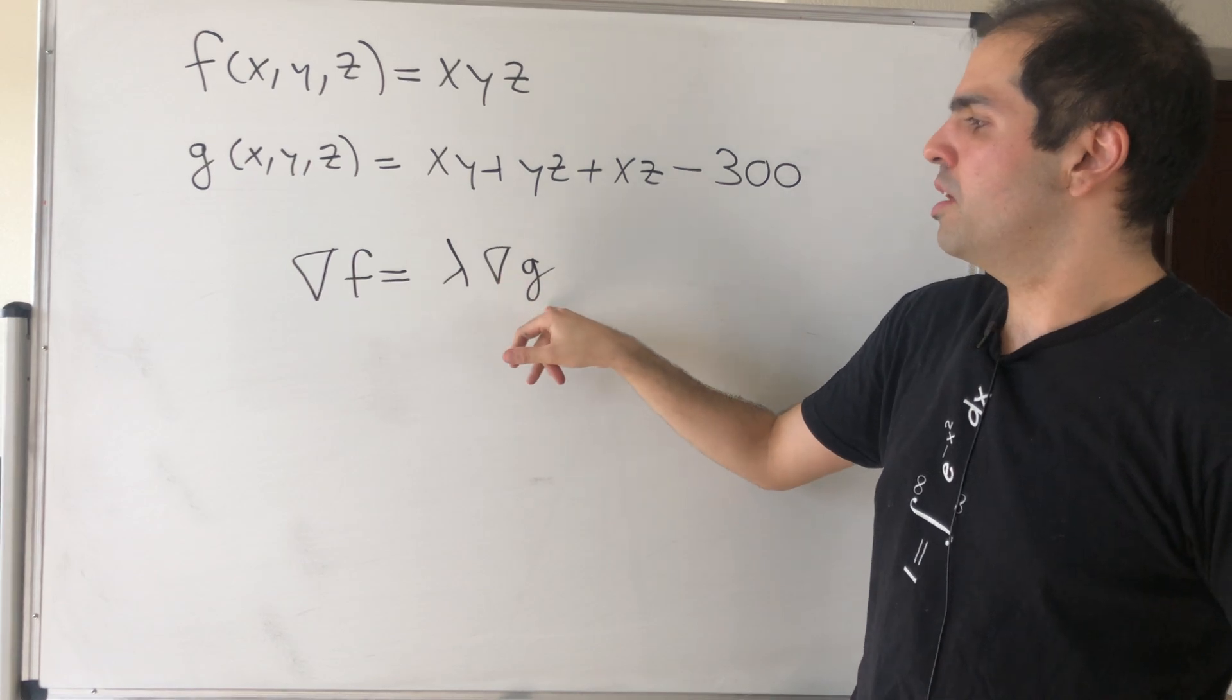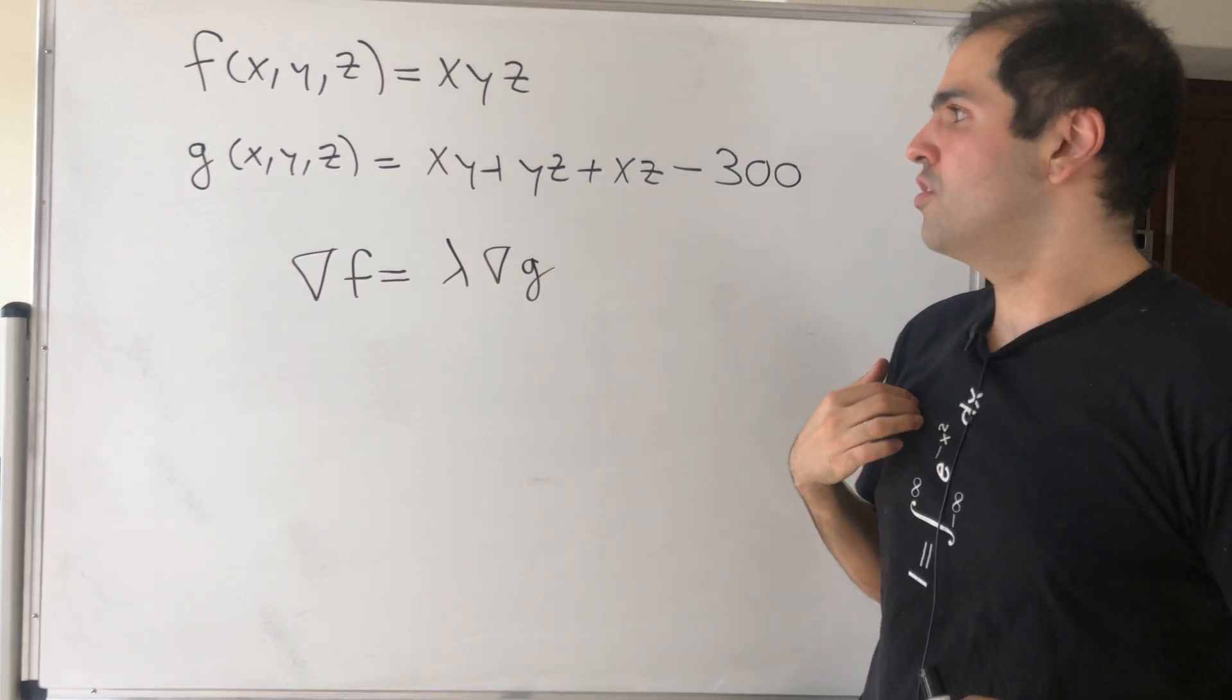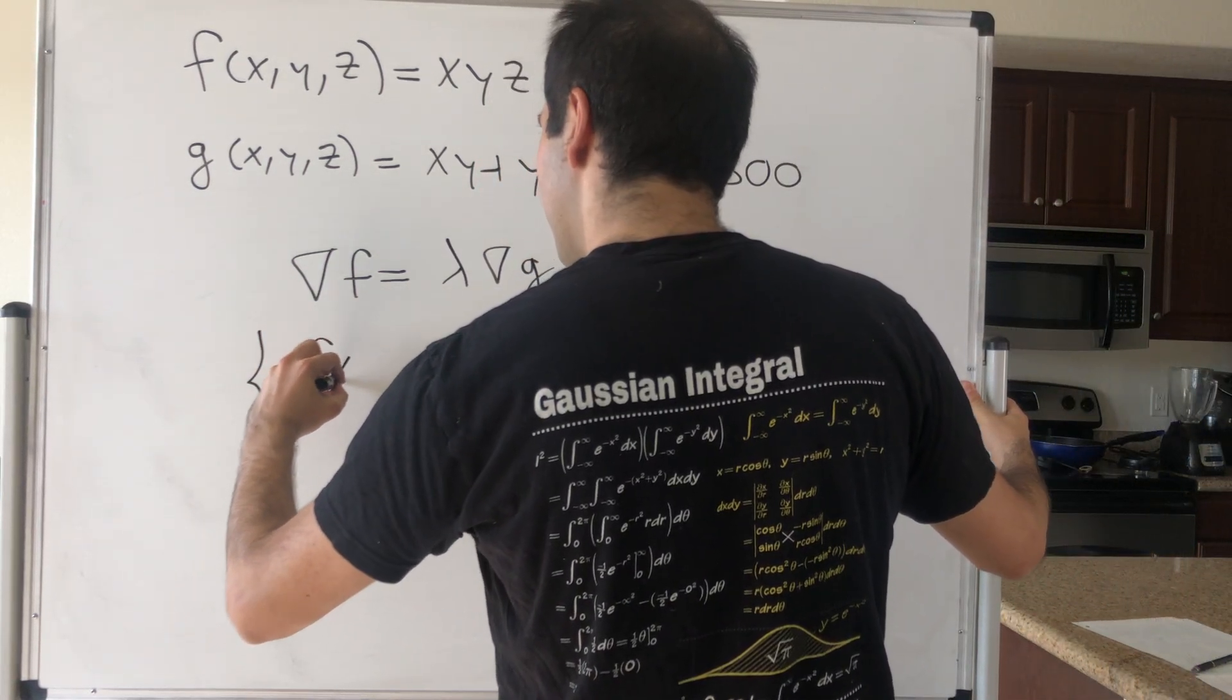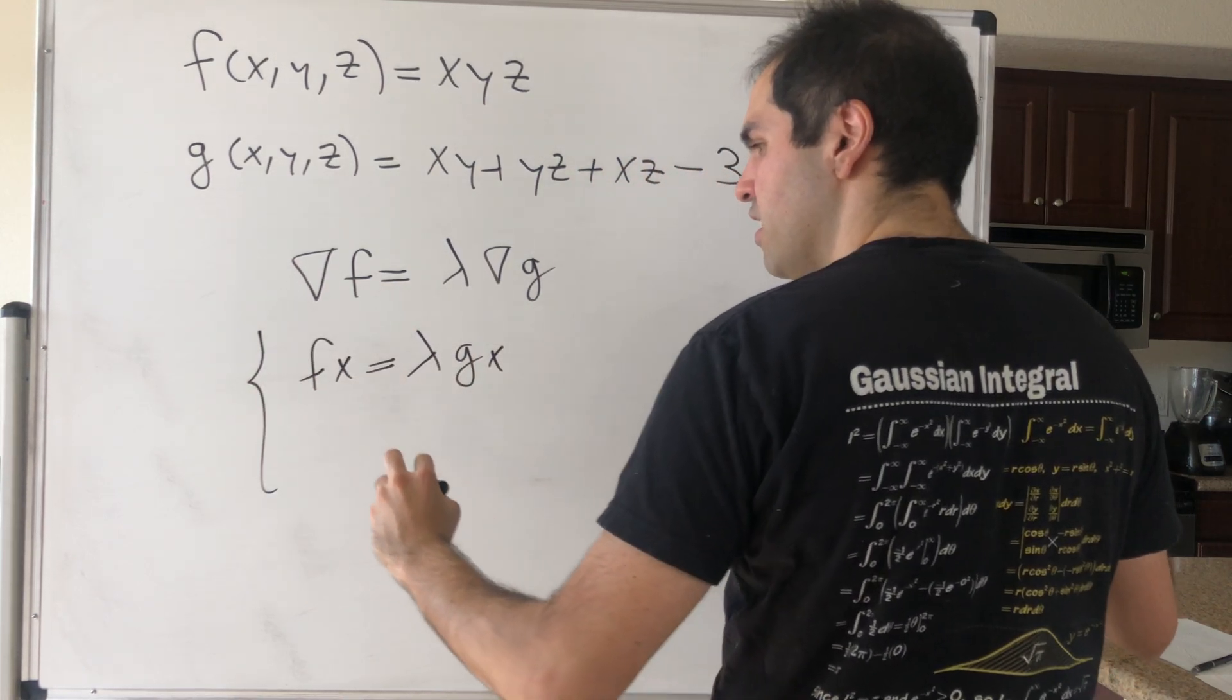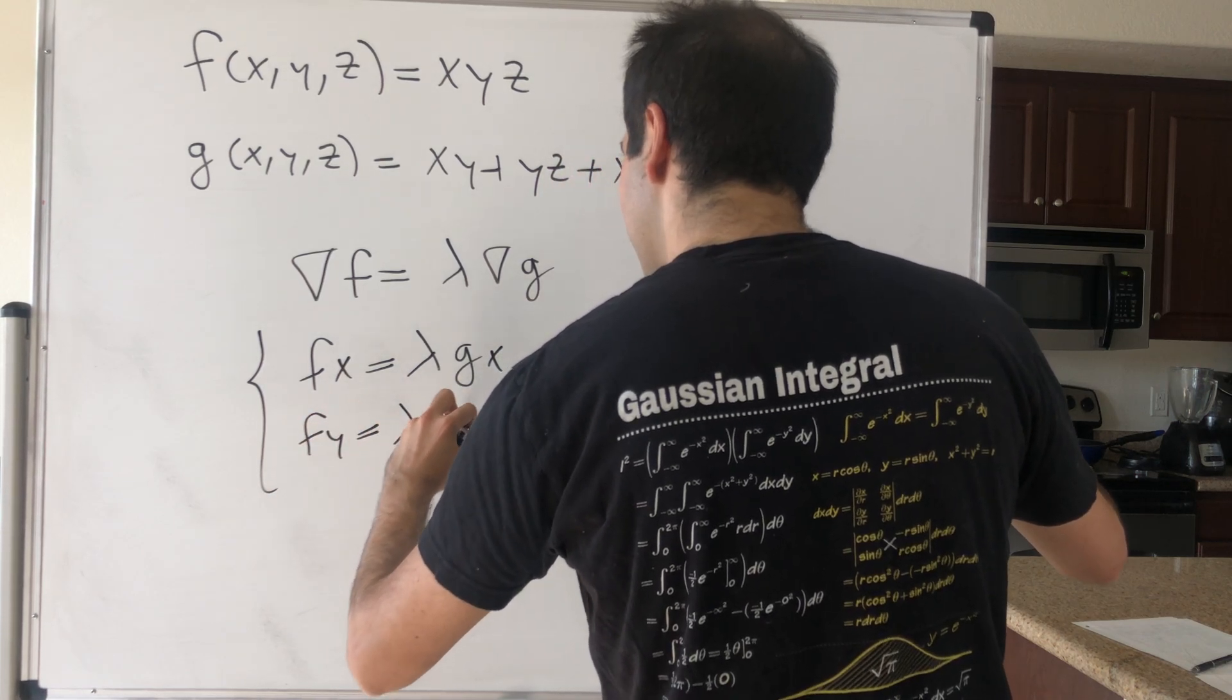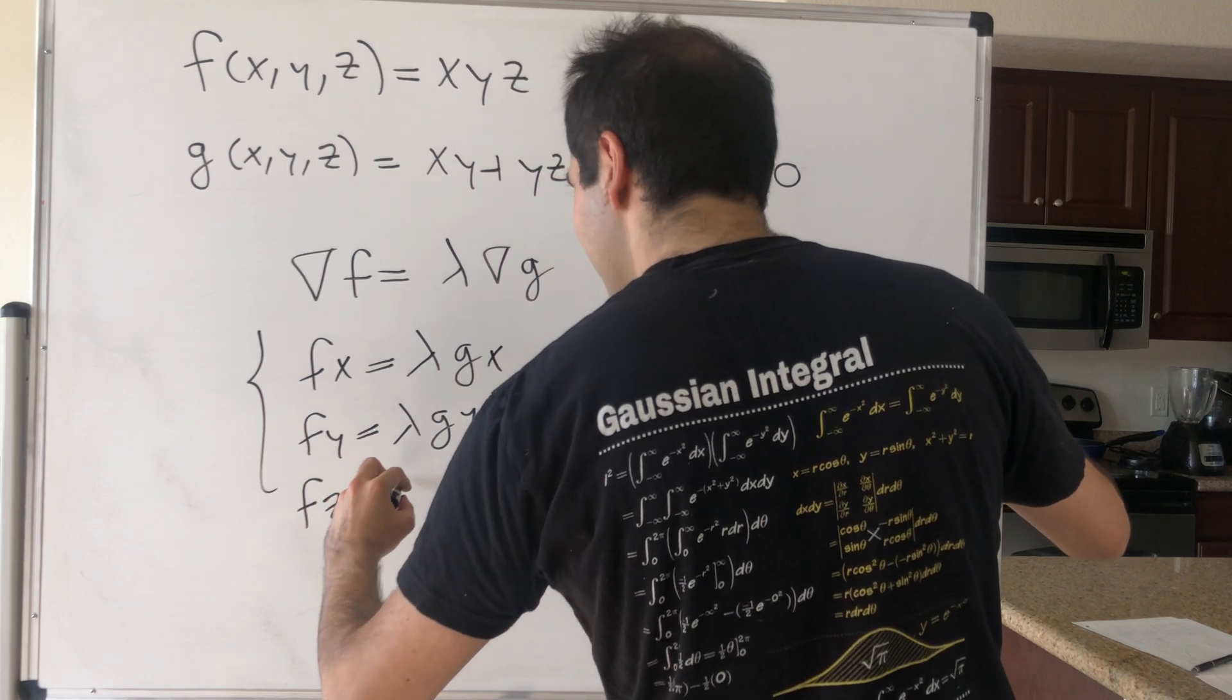What we need to do is differentiate F with respect to x and set it to lambda times the derivative of G with respect to x, and same thing for the other derivatives. So Fx is lambda Gx, Fy is lambda Gy, Fz is lambda Gz.